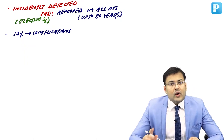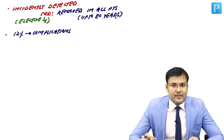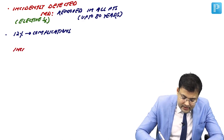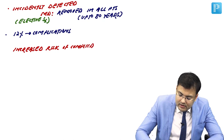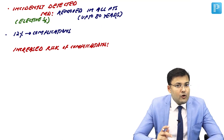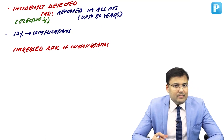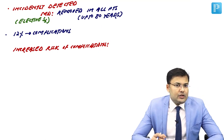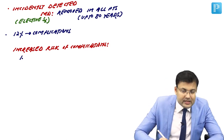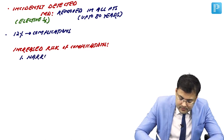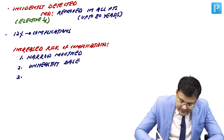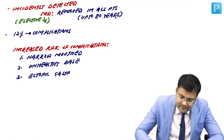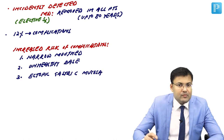What are the features of Meckel's diverticulum that increase the risk of complications? Three features: first, narrow-mouthed diverticulum; second, unhealthy base; and third, presence of ectopic gastric mucosa — which is generally the reason for an unhealthy base. These are the important points related to Meckel's diverticulum.